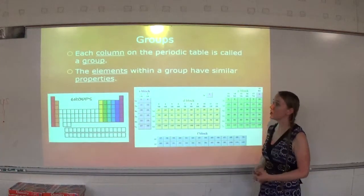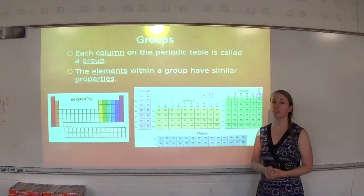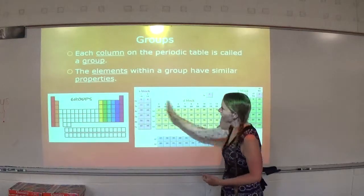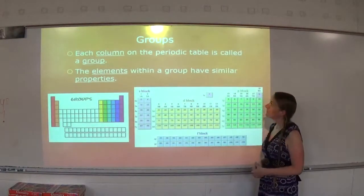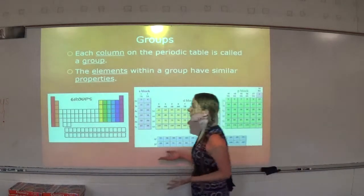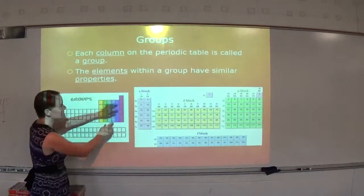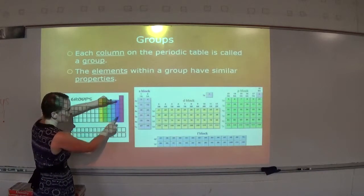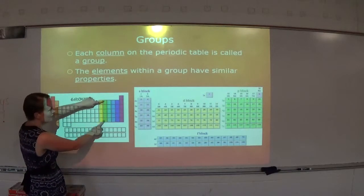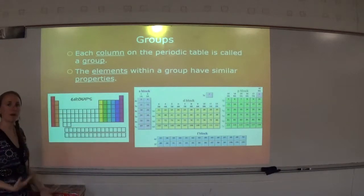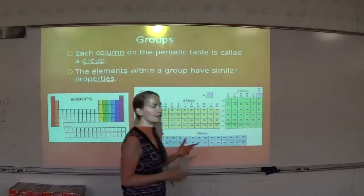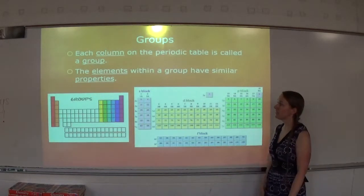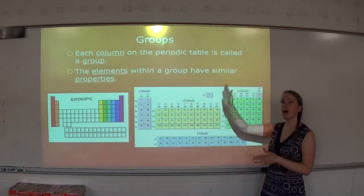Each column on the periodic table is called a group. If you learned back in middle school that it's called a family, we do not call those families anymore. Rows are called periods, columns are called groups. The elements within a group have similar properties. For example, if the property were color, every element in one column might be blue, every element in another column might be green. By properties we usually mean things like high melting point, metallic nature, or tendency to be very reactive. The elements in the same group or column have similar properties.